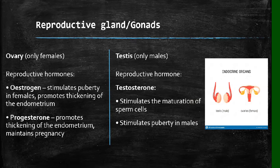Moving to the male hormone, testosterone. Testosterone stimulates the maturation of sperm cells. When sperm cells are produced in the testes, they go to the epididymis where they mature, and testosterone helps in this maturation process so that they are capable of fertilizing an egg. Testosterone also does in males what oestrogen does in females during puberty — males start to grow pubic hair, a beard, and experience many other changes.